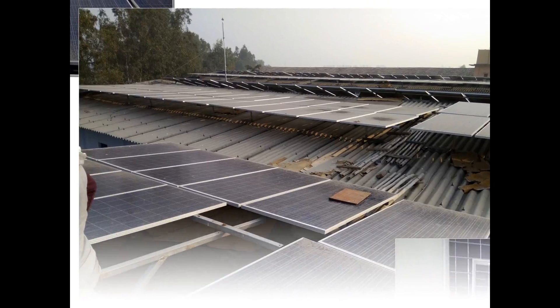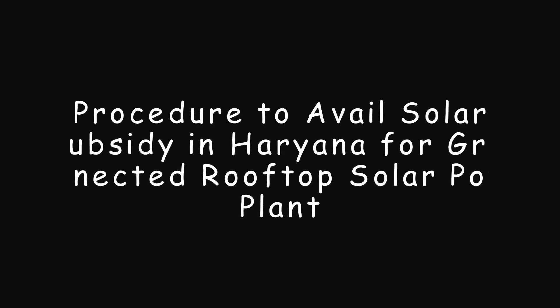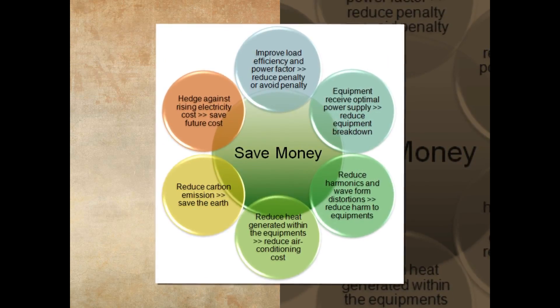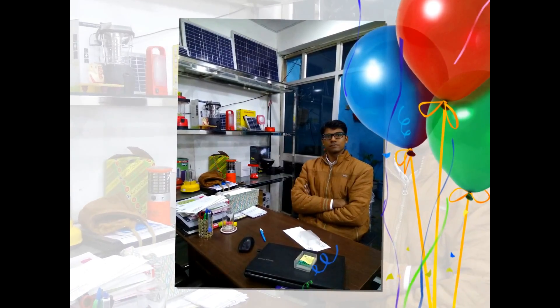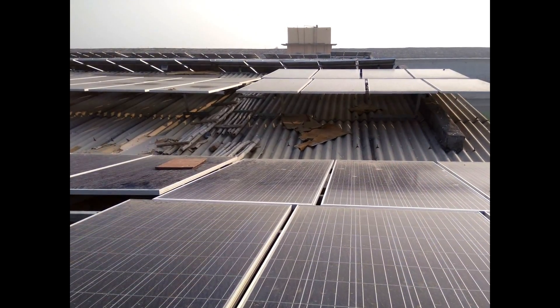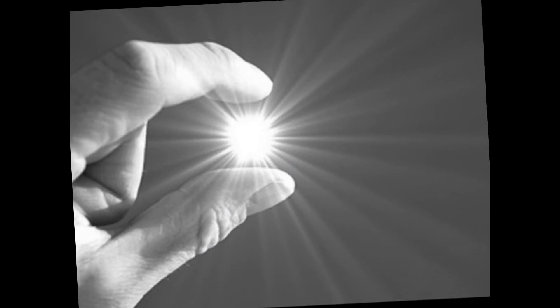An on-grid solar power plant equivalent to the sanctioned load (SL) of your electric meter, ranging from 1 to 500 kWp, may be installed after obtaining prior sanction from the state nodal agency. An on-grid solar plant is comprised of solar panels, mounting structure, connectors, DC wire, on-grid string inverter, AJB, DJB, SPD, earthing and lightning arresters, along with other Balance of System (BOS) components. It also includes a mandatory 5-year Annual Maintenance Contract (AMC) as per MNRE guidelines, in addition to individual guarantees and warranties of various products and components.